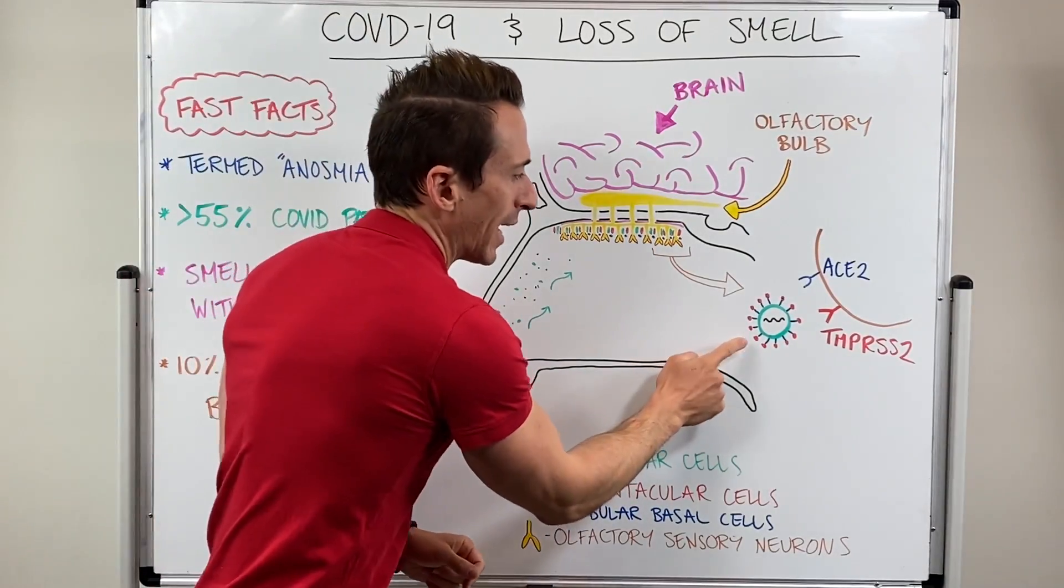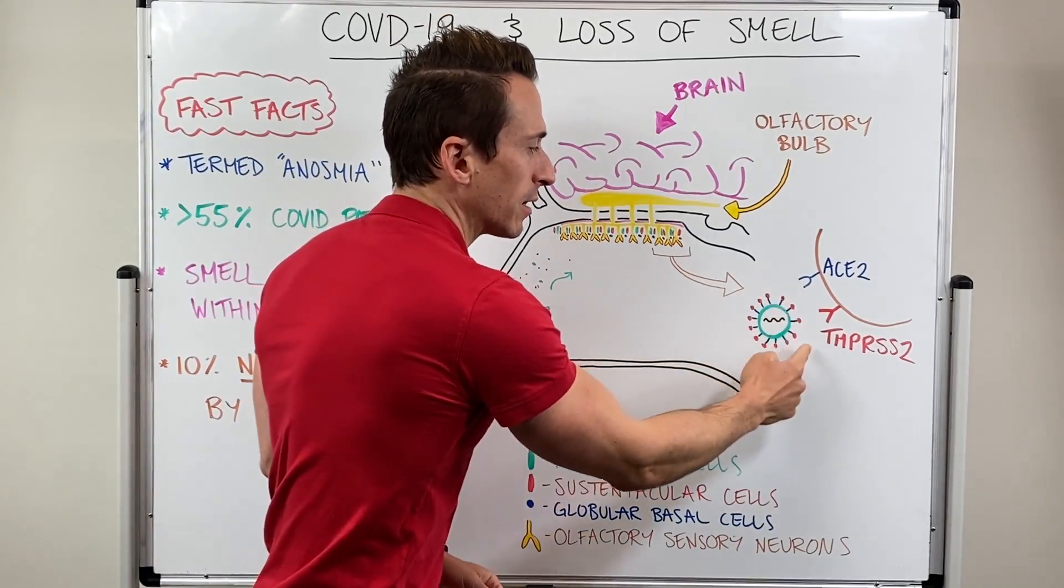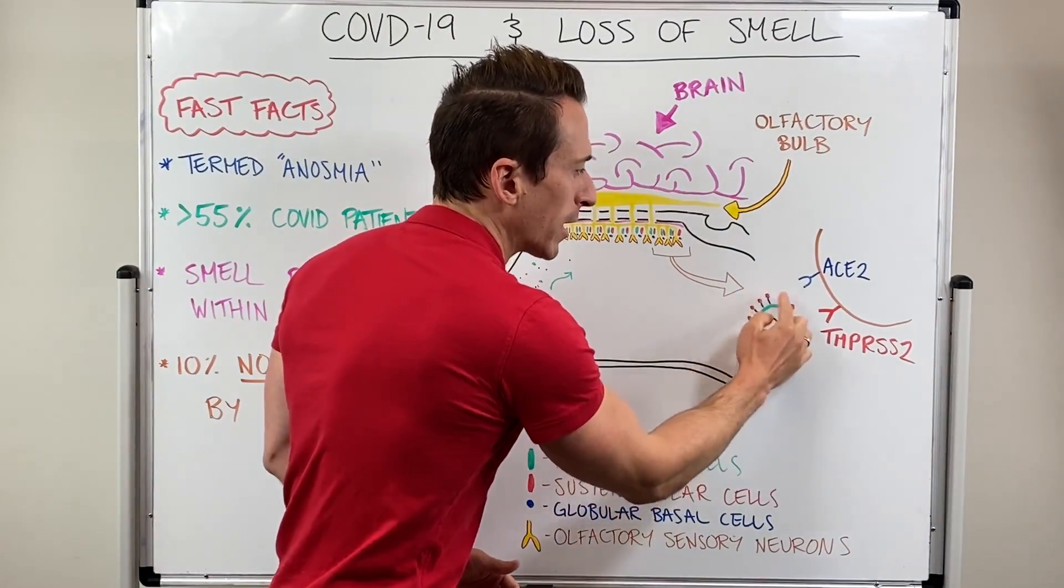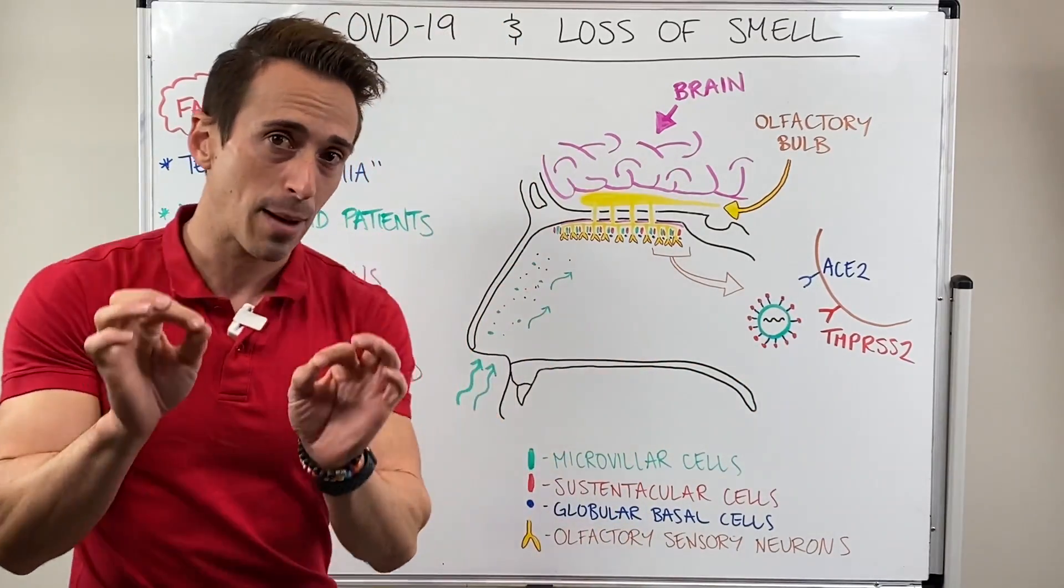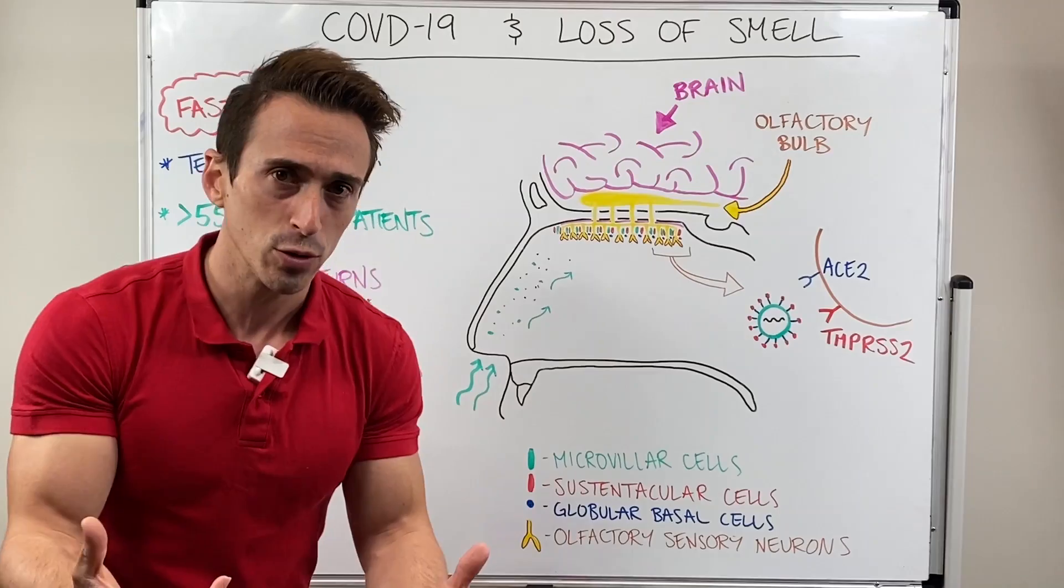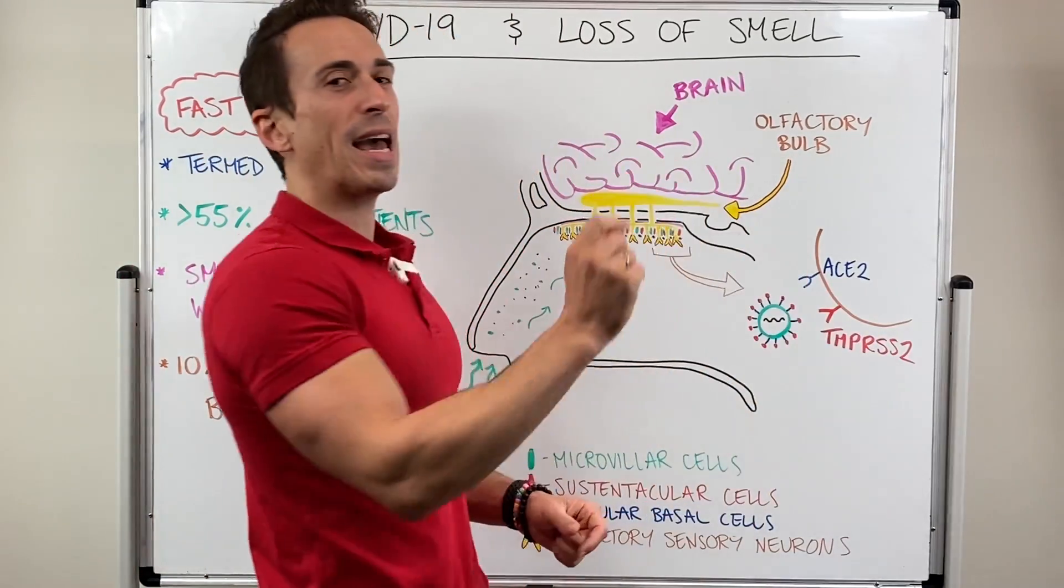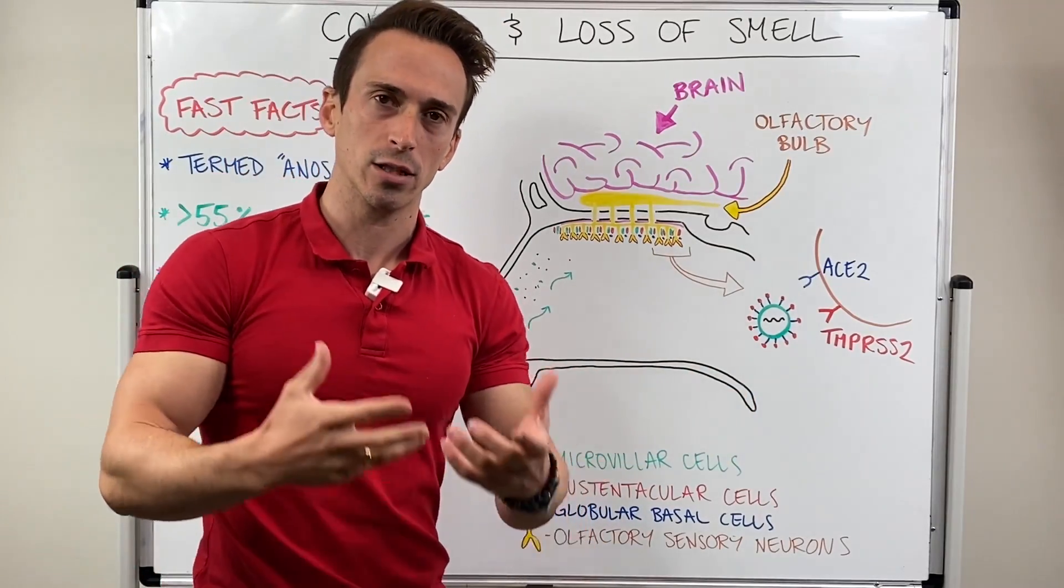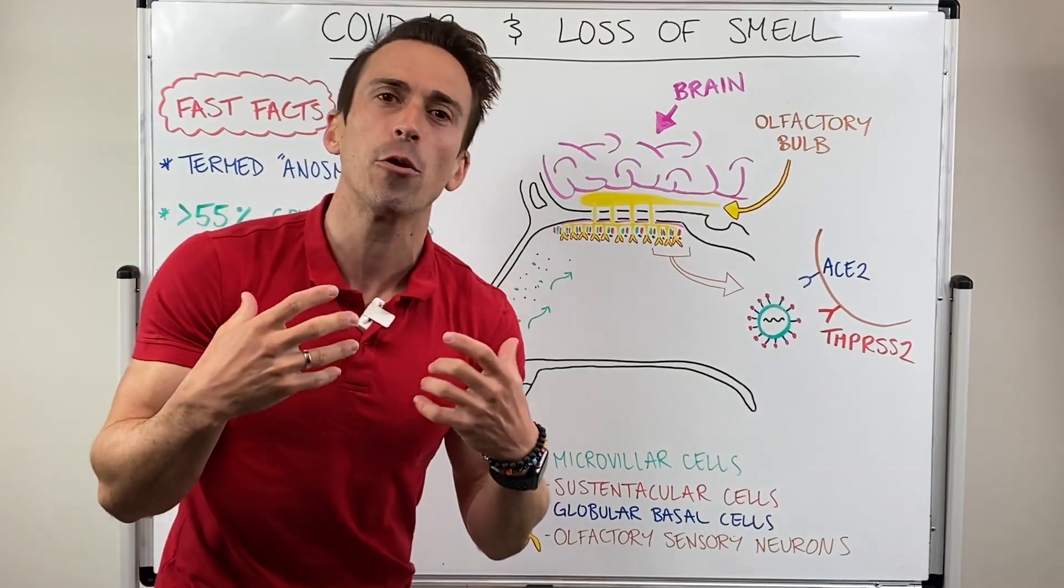When we inspire, for example, particles that contain the virus SARS-CoV-2, we know that the virus is surrounded by proteins called S-proteins. What needs to happen is cells or tissues need to express two particular receptors: ACE2 and TMPRSS2. ACE2 is angiotensin-converting enzyme 2, and TMPRSS2 is a serine protease.